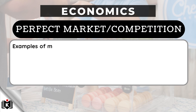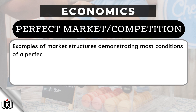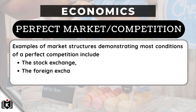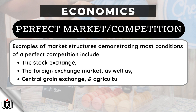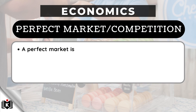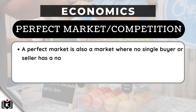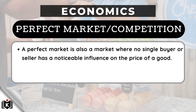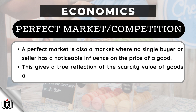Examples of market structures demonstrating most conditions of perfect competition include the stock exchange, the foreign exchange market, as well as central grain exchange and agricultural produce markets. A perfect market is also a market where no single buyer or seller has a noticeable influence on the price of a good. This gives a true reflection of the scarcity value of goods and services.